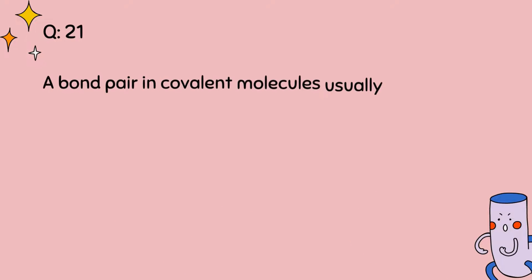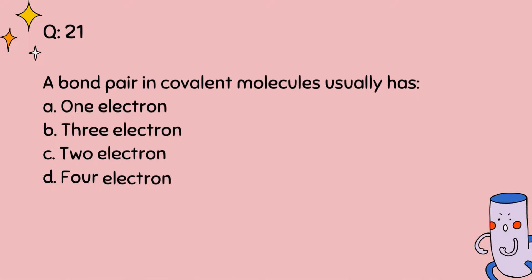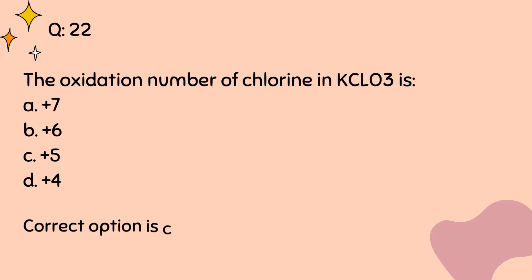Question number 21. A bond pair in covalent molecules usually has: A, 1 electron, B, 3 electron, C, 2 electron, D, 4 electron. Correct option is C. Question number 22. The oxidation number of chlorine in KClO3 is: A, plus 7, B, plus 6, C, plus 5, D, plus 4. Correct option is C.